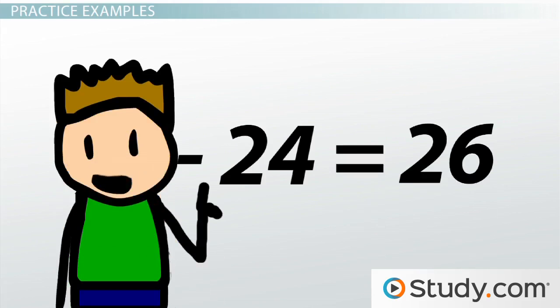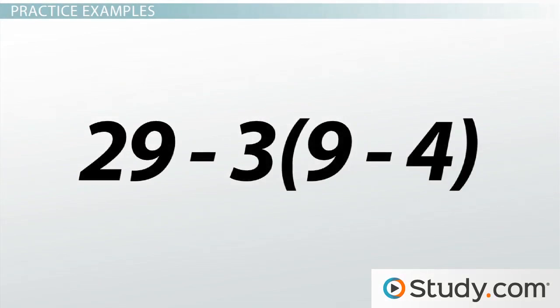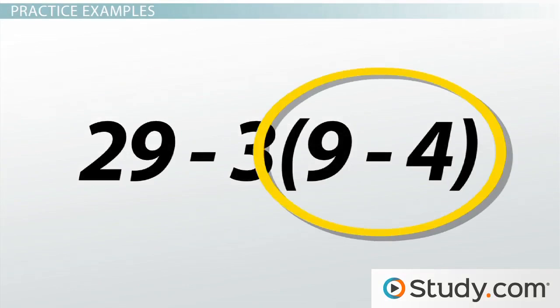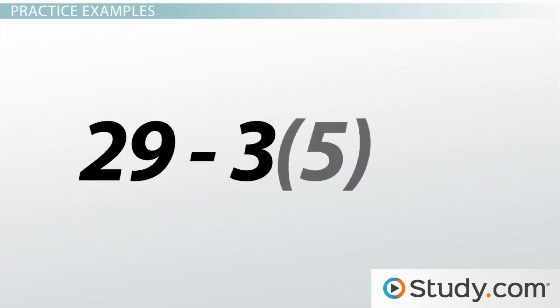Ready for one more? 29 minus 3 times the quantity of 9 minus 4. Again, evaluate the numbers inside the parentheses first: 29 - 3(5).